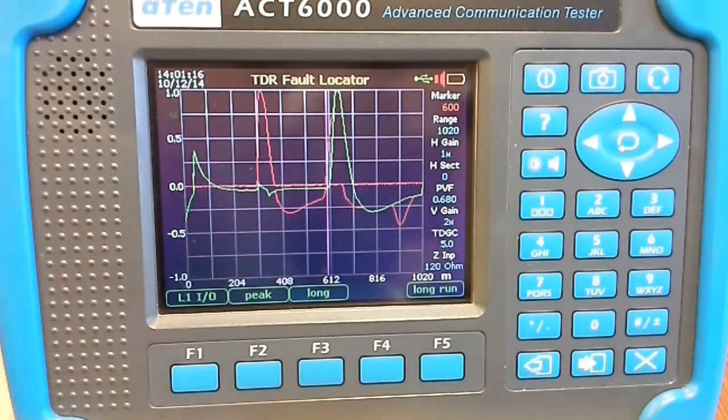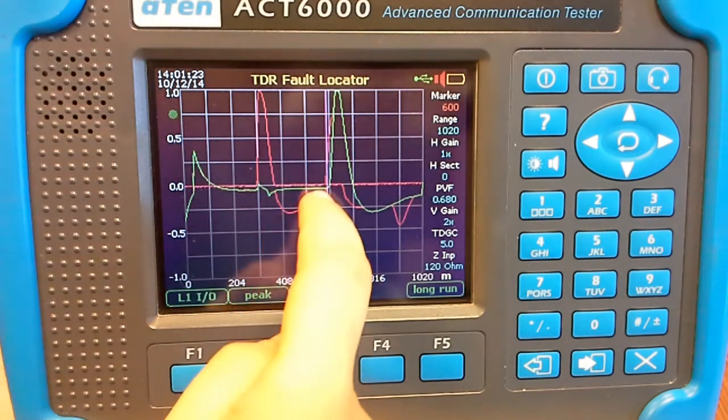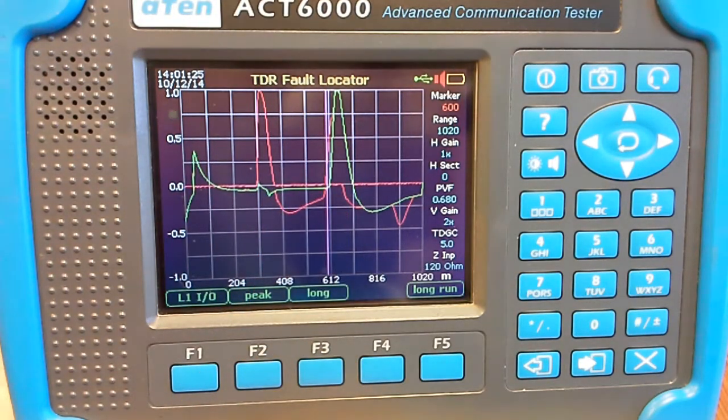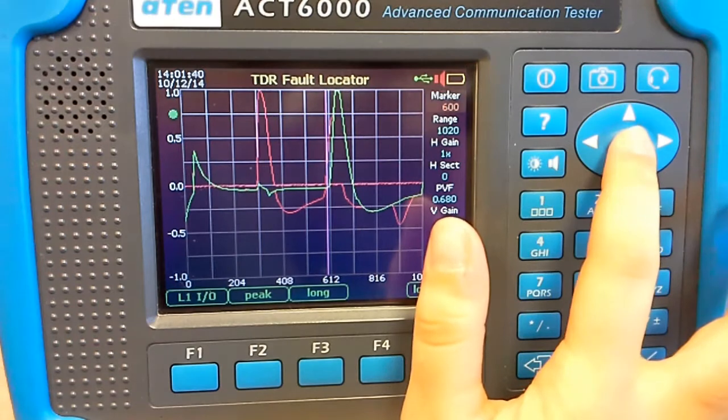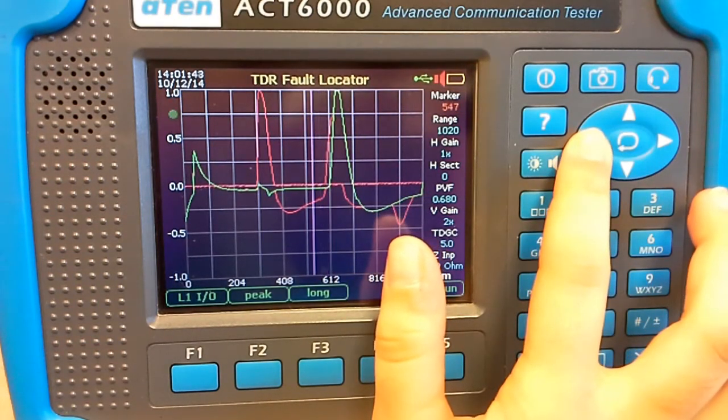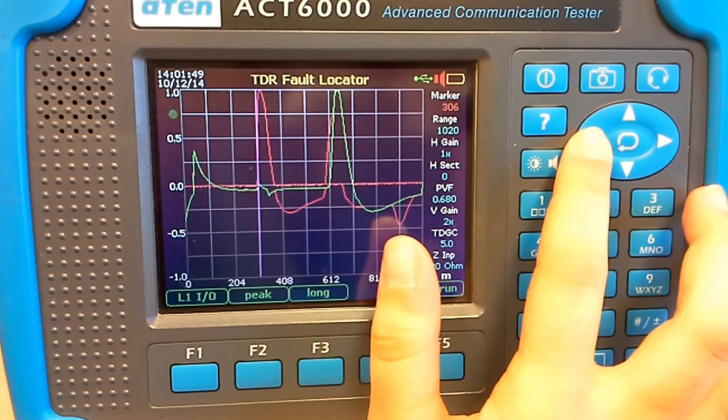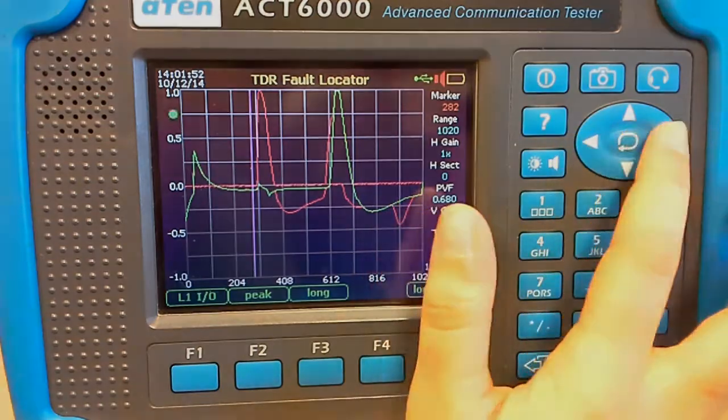So here, the red line shows us that there is a microinterruption. So to see at which point there is this microinterruption, we have to move the marker.